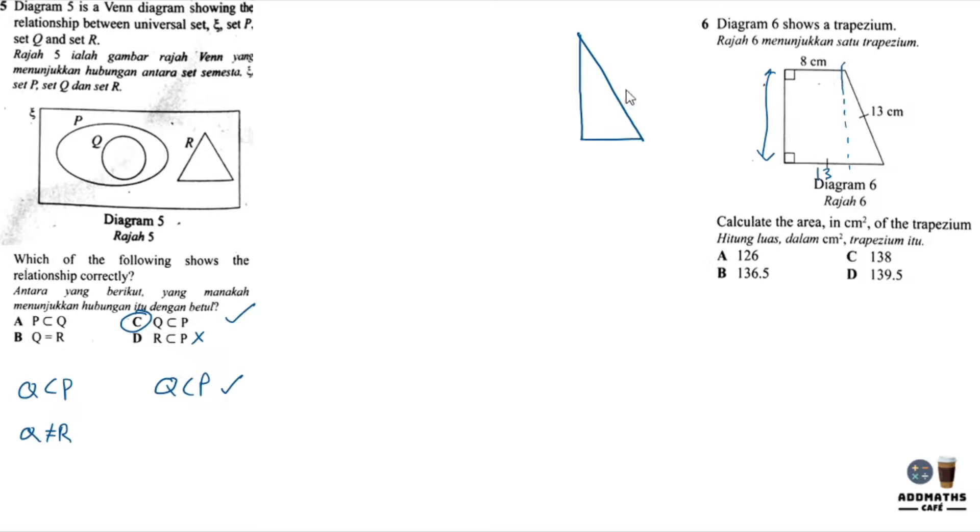We know that this is 13, and the base here will be 5 because the whole thing is 13. If this is 8, then this part will be 5. So what is the height? To find the height, we use the hypotenuse minus the 5 squared, by square root. This answer you will get 12.